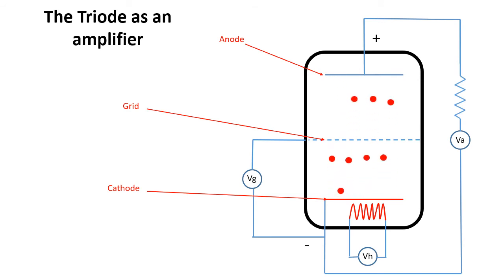In addition, small changes to the voltage on the grid will allow varying amounts of electrons to pass from the cathode to the anode depending upon the amount of voltage applied. In this way, a small change in the grid voltage can cause a relatively large change in the current passing between the anode and the cathode. Thus, a small AC signal applied to the grid produces an amplified signal at the anode.